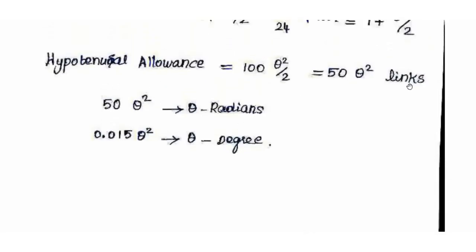The hypotenusal allowance formula is 50 θ² in terms of links. Substituting 0.015 × θ² with θ = 5 degrees, and using 5 × 5 × 20/100 links, gives the allowance value. Comment your answer. Thank you.